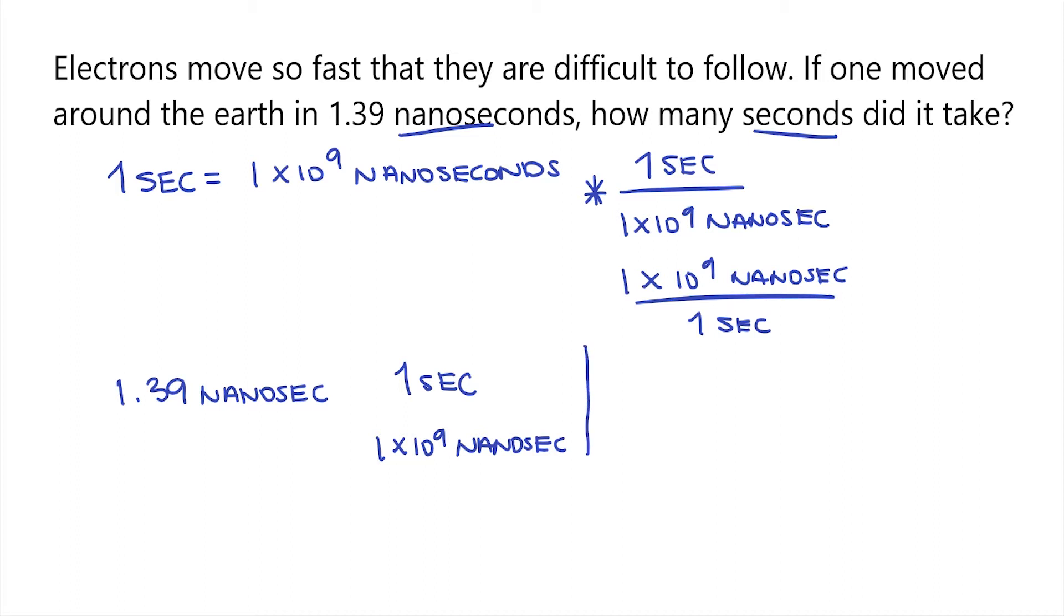And now let's go ahead and solve. So 1.39 times 1 is still 1.39. And we also have to carry our units. We have nanoseconds and seconds. So this is going to be nanoseconds times seconds. And then on the bottom, we have our 1 times 10 to the 9 nanoseconds.